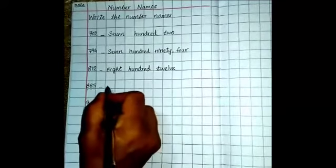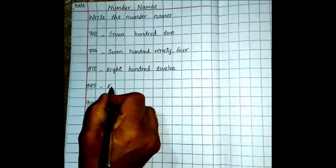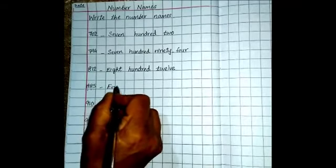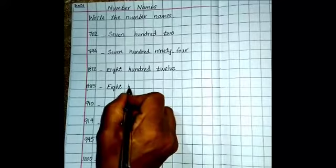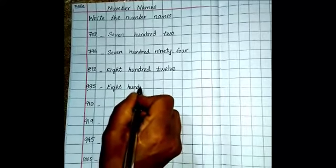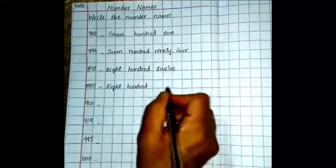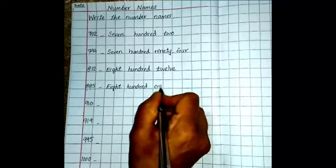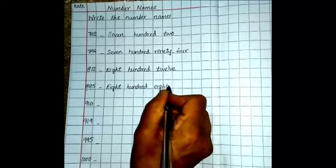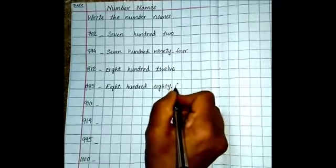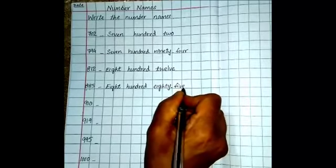885. E-I-G-H-T-8, H-U-N-D-R-E-D-100, E-I-G-H-T-Y-80, then write 5. 885.